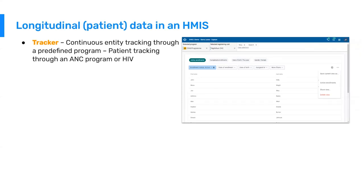The next type is tracker. Tracker is the continuous monitoring of a tracked entity through a predefined program. A tracked entity can be anything you define — a person, patient, mother, child, village, or household — and you define the specific program or series of events that tracked entity goes through.